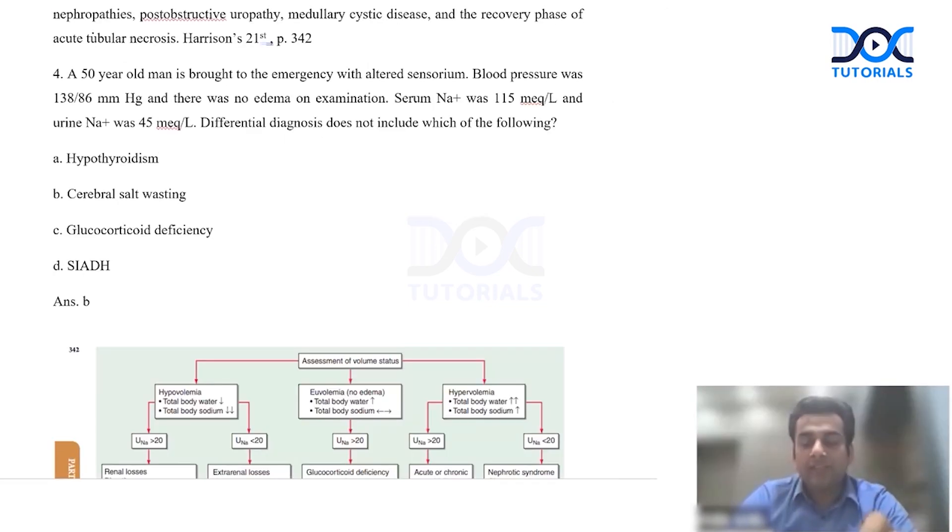The next question is: a 50 year old man is brought to the emergency with altered sensorium. The blood pressure was 138 by 86, so it is fairly normal. There was no edema. The sodium was 115 milliequivalents and the urinary sodium was 45.